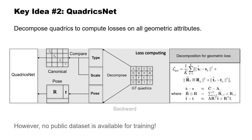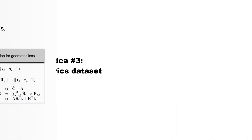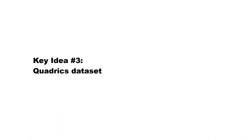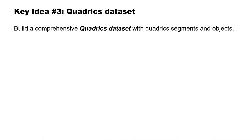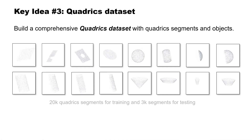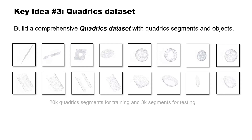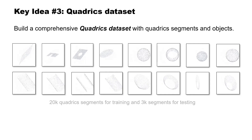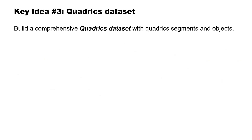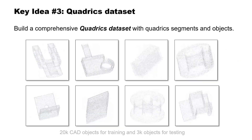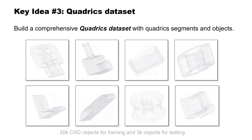However, there is no publicly available dataset with labeled quadrics parameters for training. Key idea 3 — quadrics dataset. We build a comprehensive quadrics dataset with quadrics segments and objects, and compute the quadrics parameters for all point clouds.